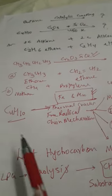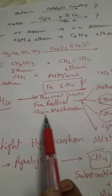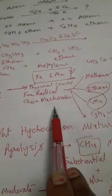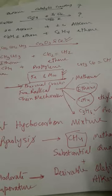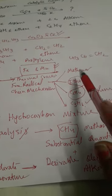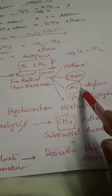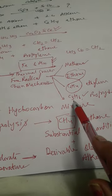Now thermal cracking also, it is free radical chain mechanism. So chain initiation, propagation, and termination, three steps will occur. And we'll get methane, ethane, ethene, and propylene, all these things. All these four products we'll get.